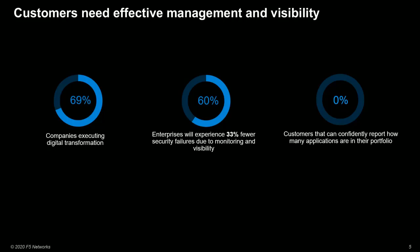60% of the enterprises that have cloud visibility — and that is a small group, since the majority has visibility concerns — claim, from a Gartner report, that because of their visibility and monitoring tools, they have one third fewer security failures. One third fewer security failures means a whole lot of additional uptime, income, and availability. Still, none of those interviewed can accurately report the number of applications in their portfolio.